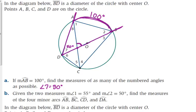They want us to find as many as we can, which means there's more than just that. That's not the only angle that intercepts arc AB. From another viewpoint, those two lines also intercept that arc, so angle 4 is also an inscribed angle for arc AB. That means angle 4 is also 50 degrees.